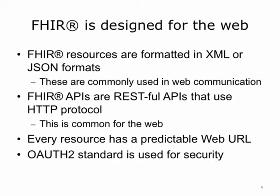That means a small set of operations are used, such as get a resource and post a resource. Additionally, there is a predictable URL for each resource. For security, we use a web security standard called OAuth2. These are well-accepted standards used in web communication, but we encourage you to do further research if you are interested in any of these characteristics of FHIR.